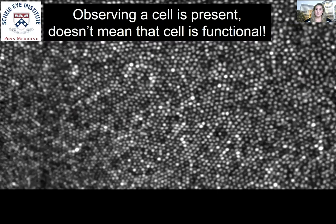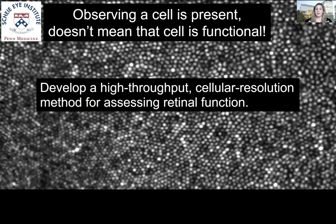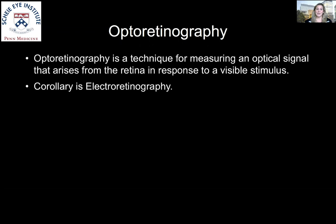Just because we observe that a cell is present within our images does not mean that cell is functional. Our role in the Audacious Goals Initiative was to develop a high-throughput cellular resolution method for assessing retinal function. The technique I'm going to talk about today is called optoretinography — a new and emerging field for measuring an optical signal that arises from the retina in response to a visible stimulus. Its corollary is electroretinography, which measures an electrical signal from the retina in response to a stimulus.